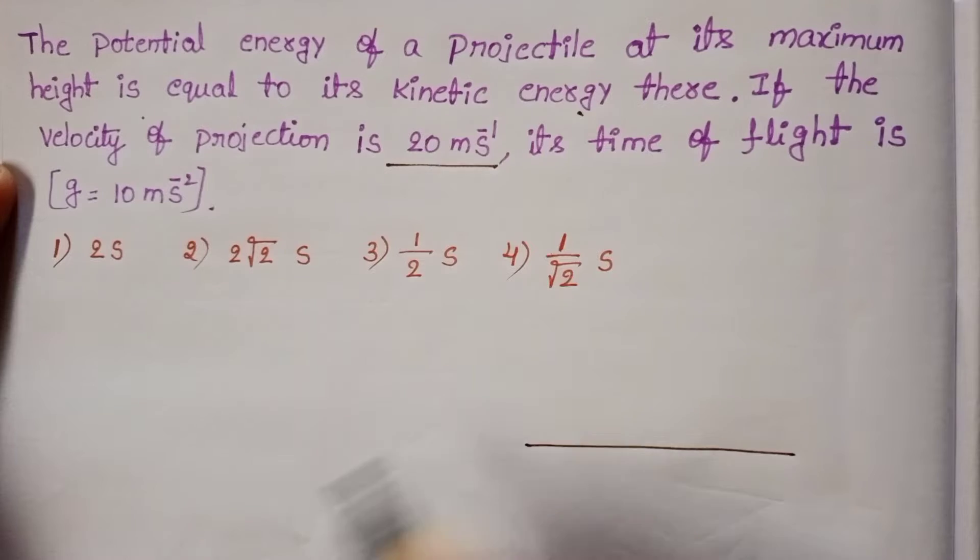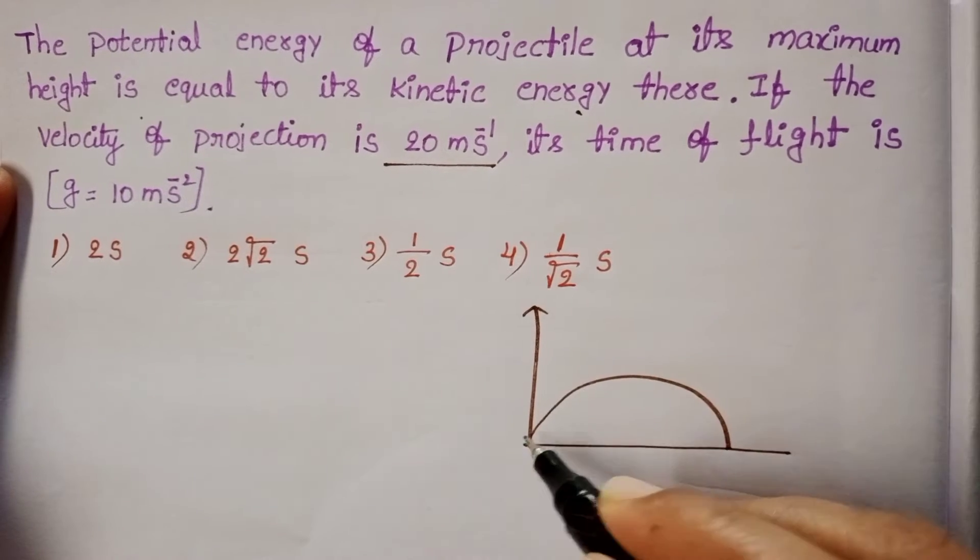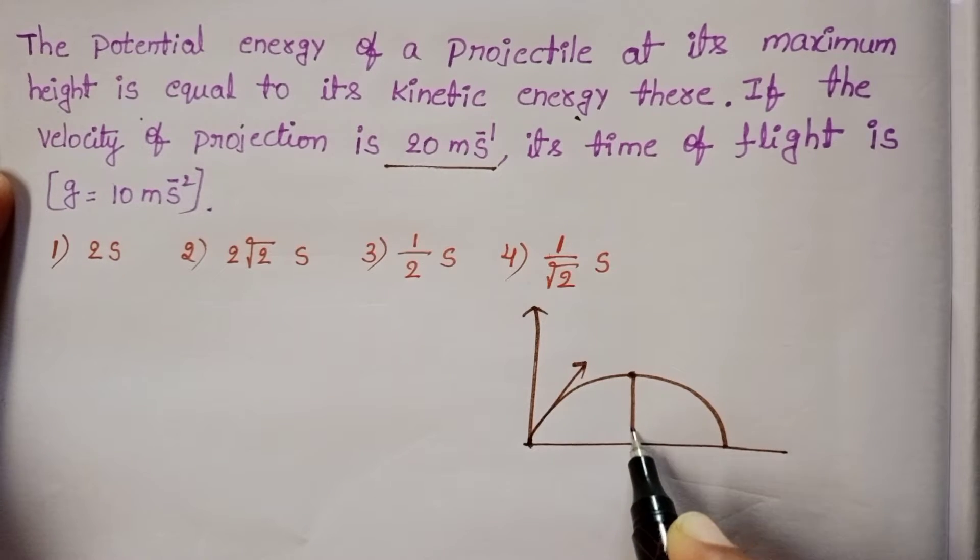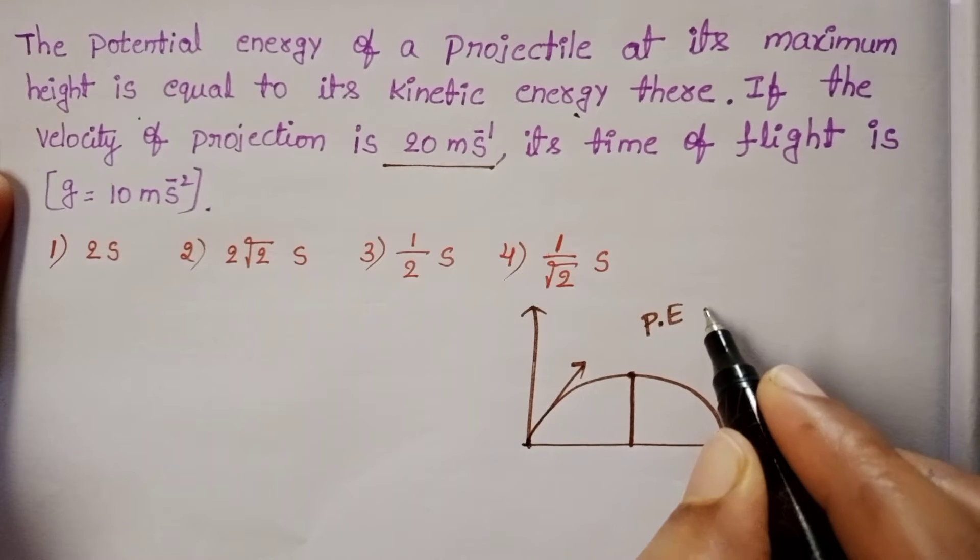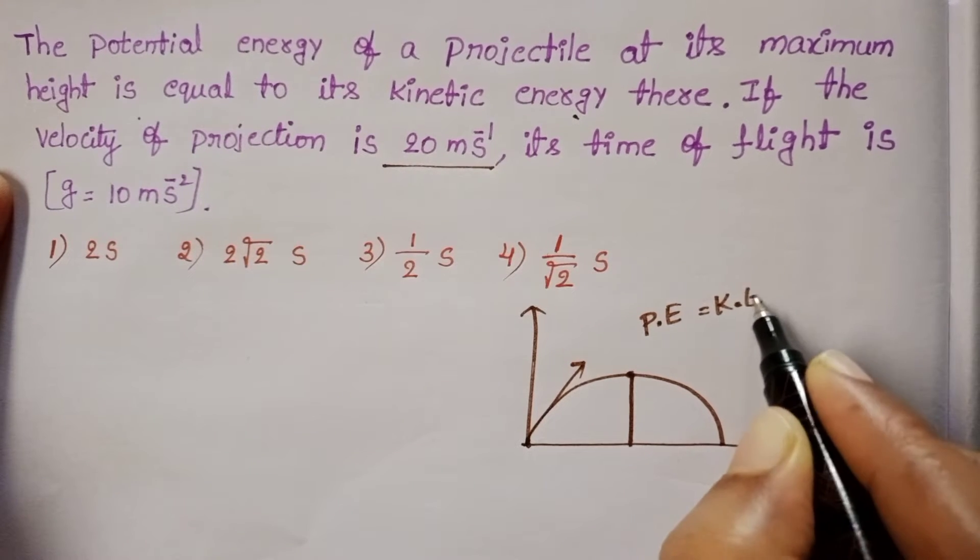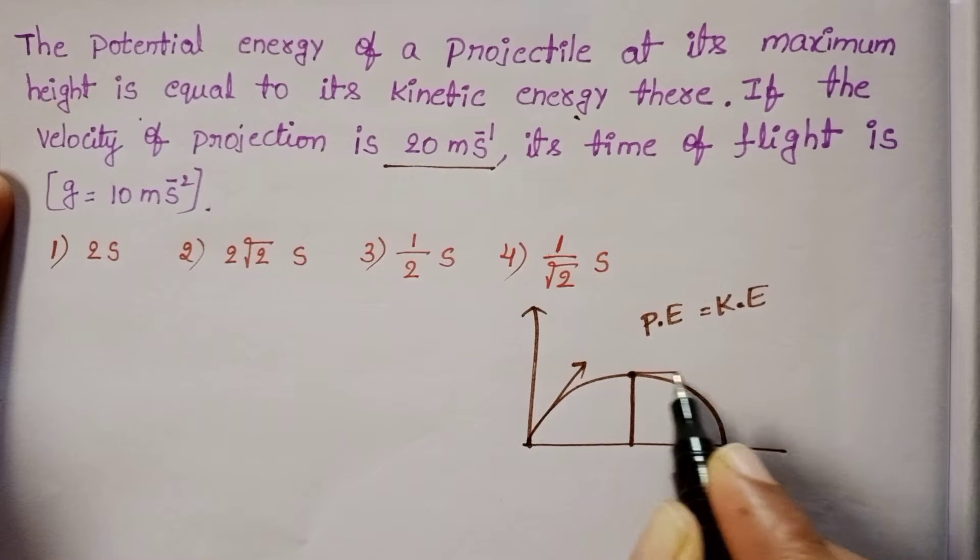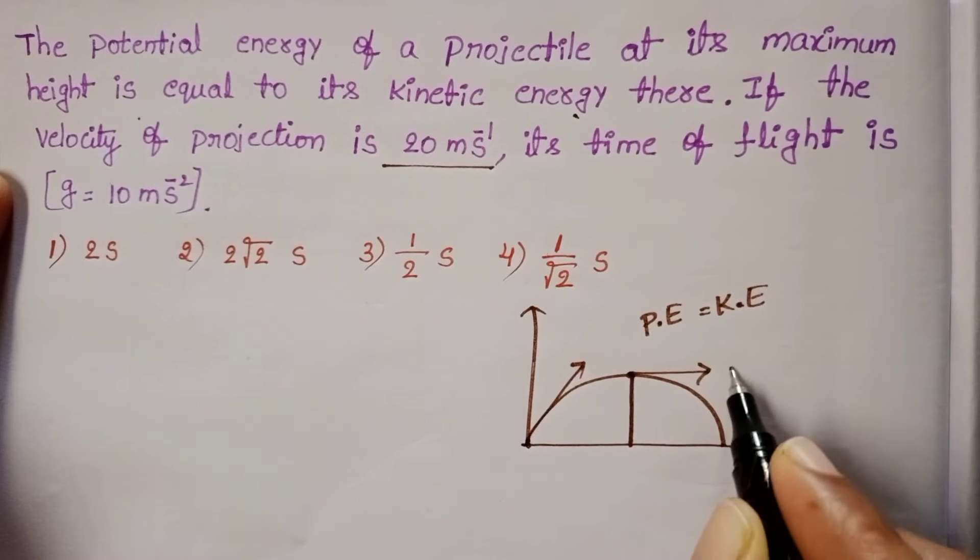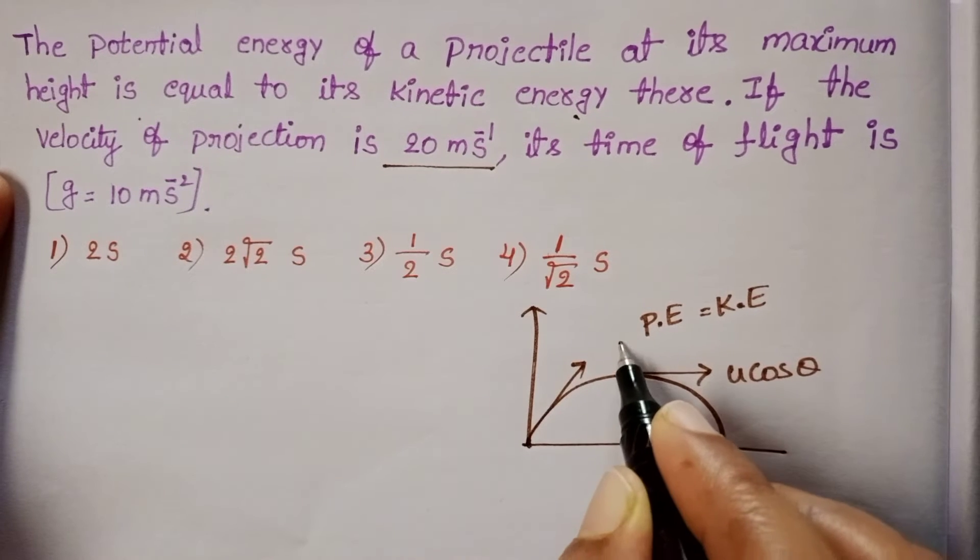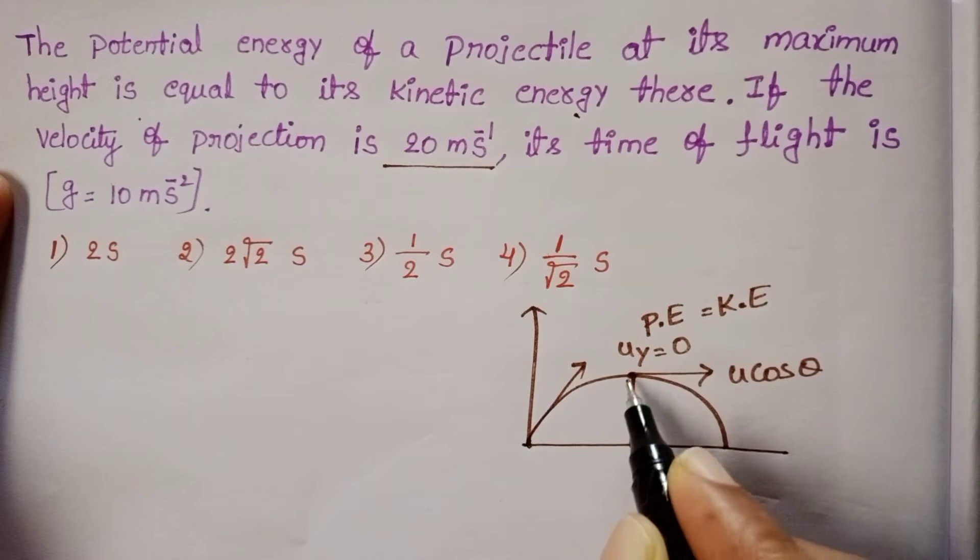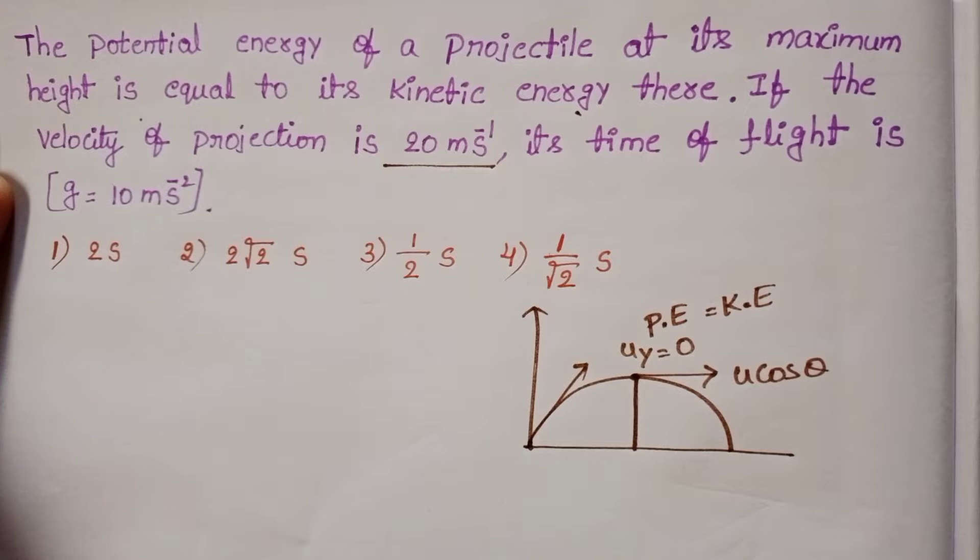In the given question, at maximum height, potential energy equals kinetic energy. At maximum height, the projectile possesses only the horizontal component of velocity. The vertical component of velocity at this point equals zero.